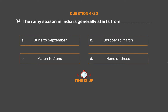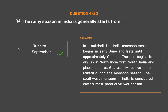The correct answer is Option A: June to September. The India monsoon season begins in early June and lasts until approximately October. The rain begins to dry up in North India first. South India and places such as Goa usually receive more rainfall during the monsoon season. The southwest monsoon in India is considered Earth's most productive wet season.